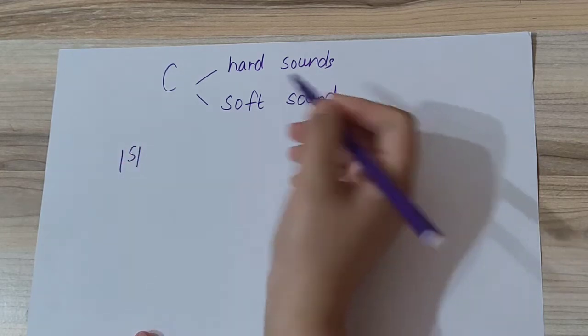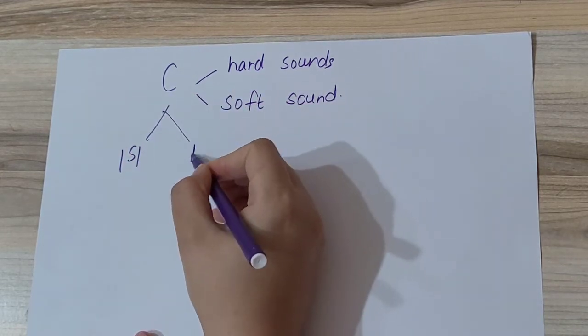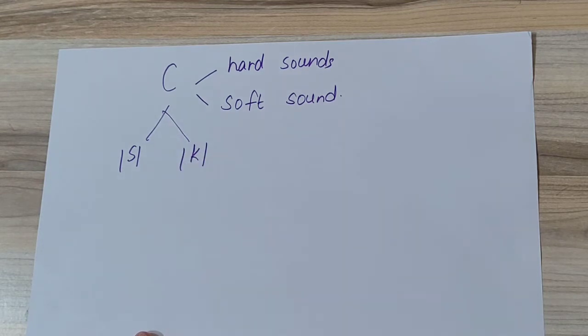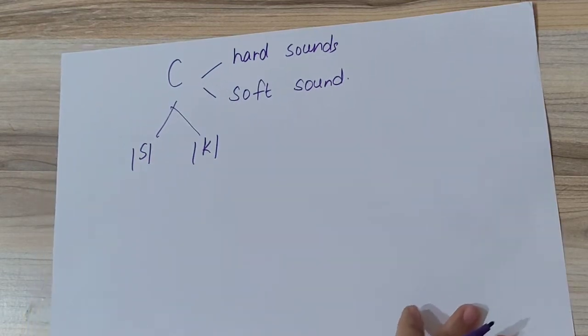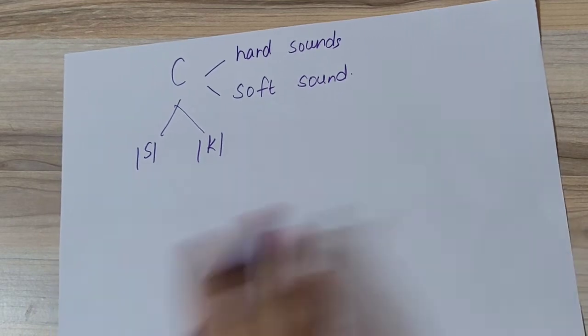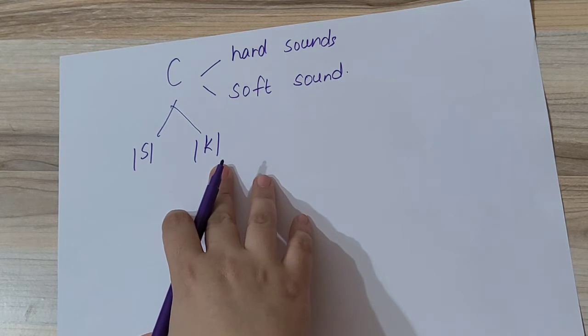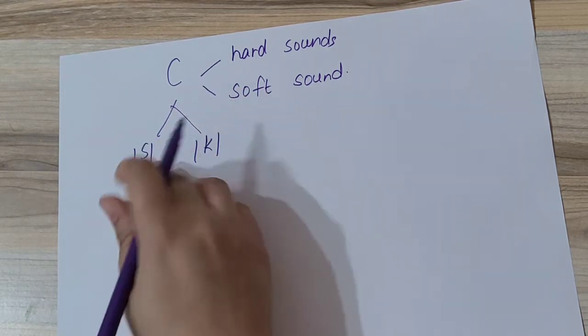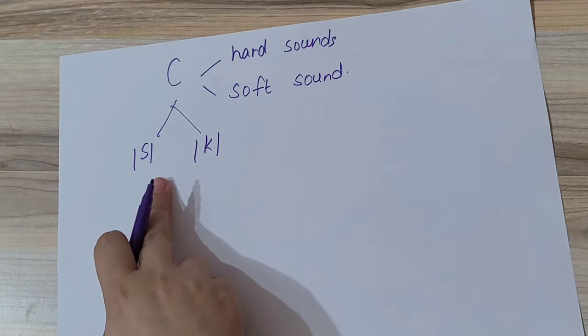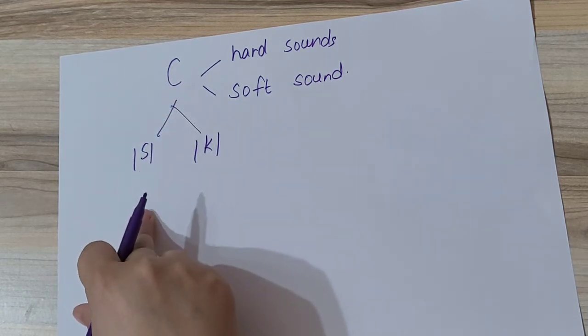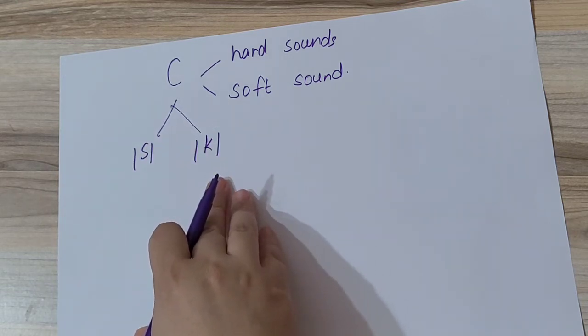When to read letter C as 'sa' and when to read letter C as 'ka'. Schools mainly teach letter C's hard sound, that is 'ka', but letter C also has a soft sound, that is 'sa'. We will now see in which words we pronounce the soft sound and in which words we pronounce the hard sound.